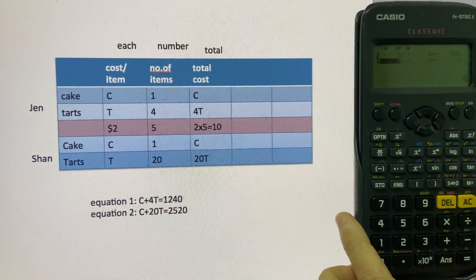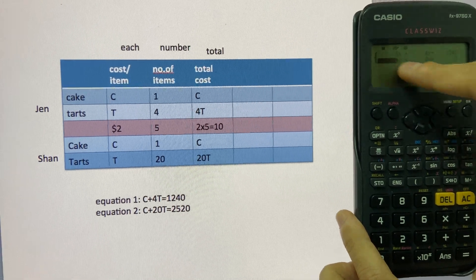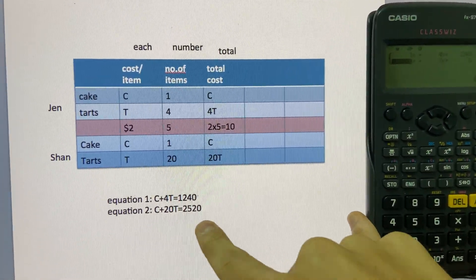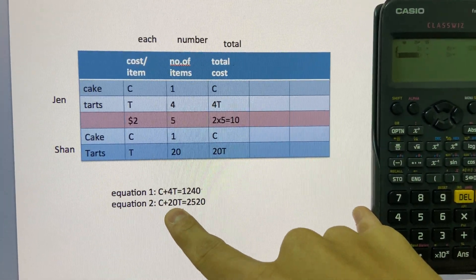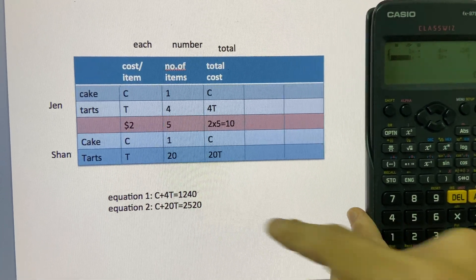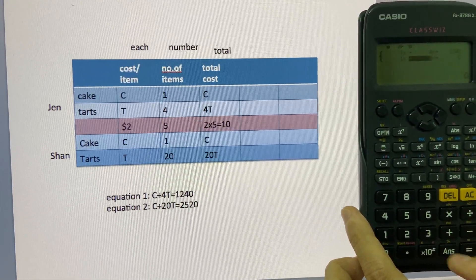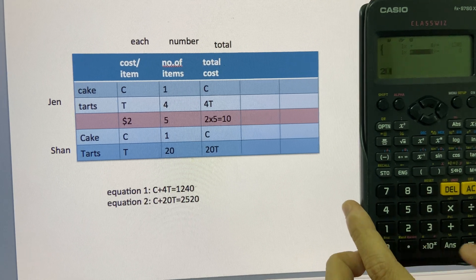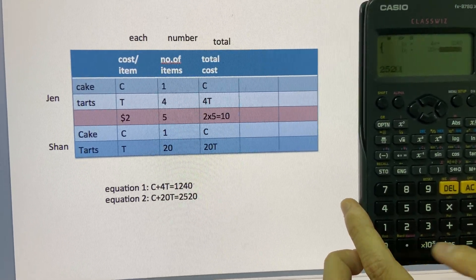Now I hope you can see we are ready to key in the second equation. So the second equation is 1C plus 20T equals to 2520. So it's 1X, 20, and then 2, 5, 2, 0.